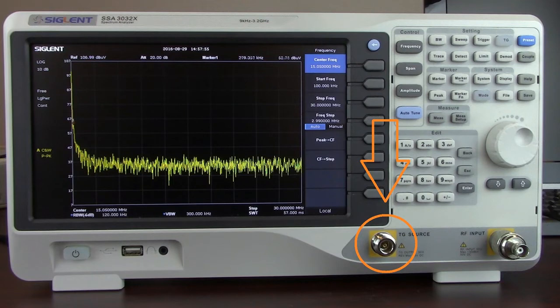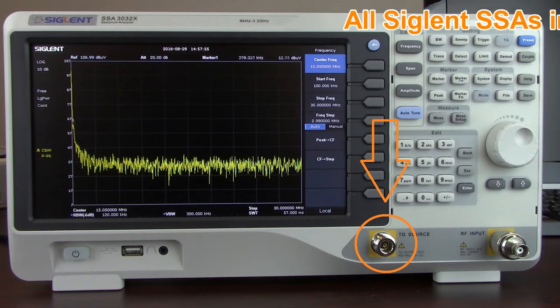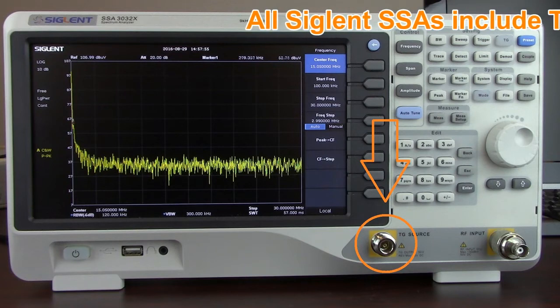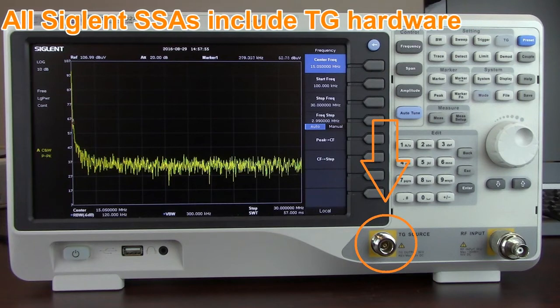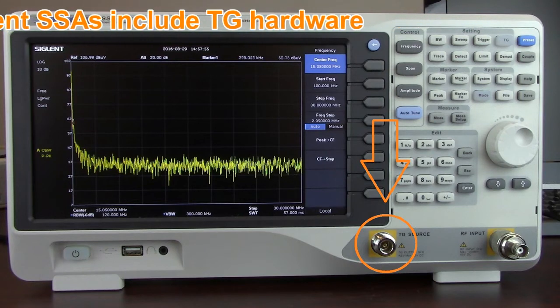With some competitive analyzers, you have to order the hardware when you buy the analyzer. There isn't an upgrade later on. You'd have to trade in your system that does not have the tracking generator option and purchase a unit that has that hardware. With Siglent, you purchase the hardware. It's included. If you don't want the feature, you don't have to buy the license and you don't have to activate it.